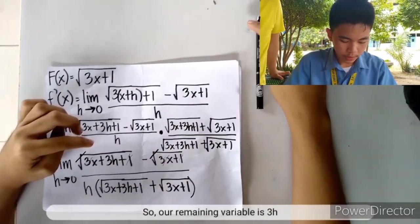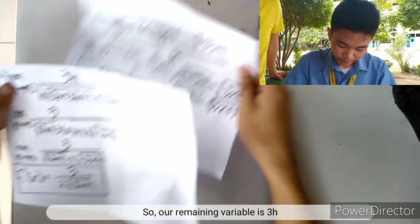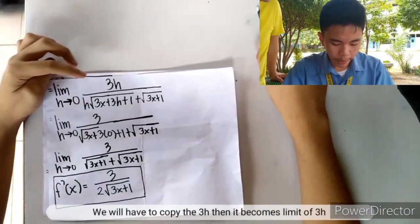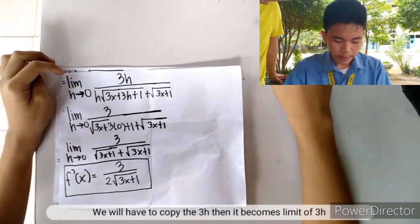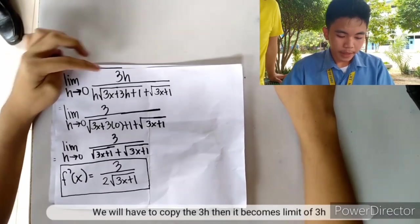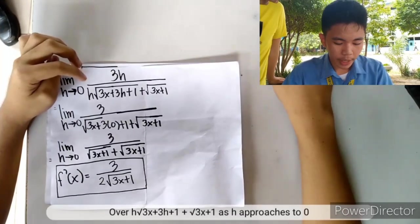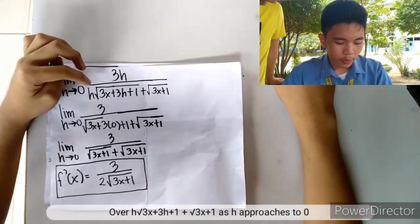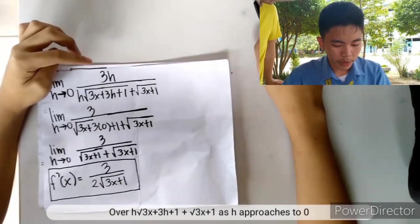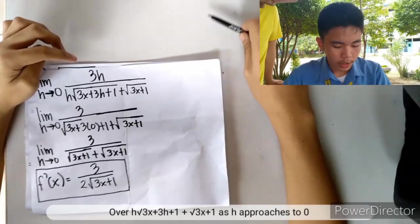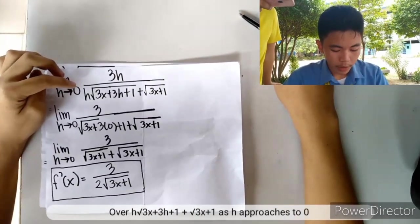Our remaining variable is 3h. We have the limit of 3h over h times the square root of 3x+3h+1 plus the square root of 3x+1, as h approaches 0.